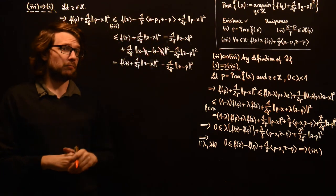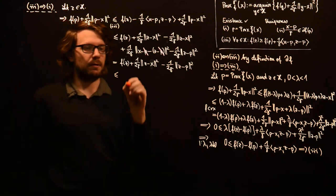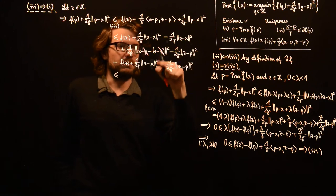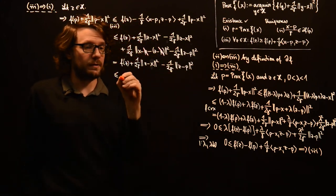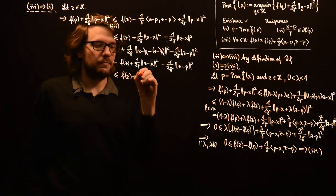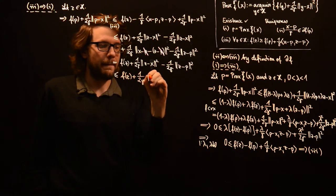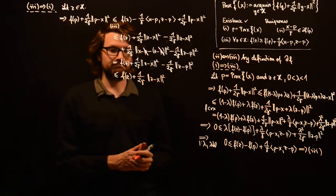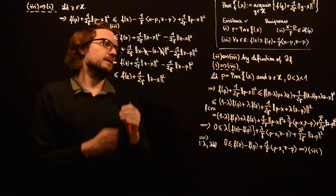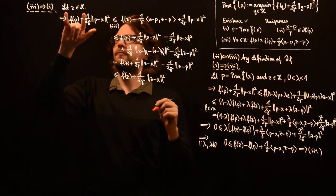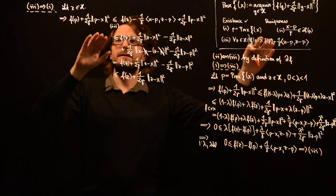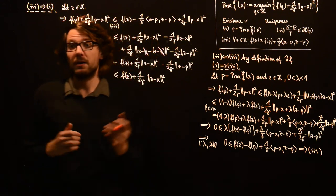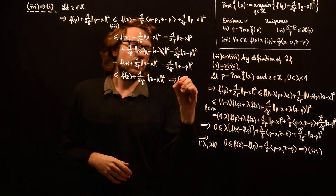This is still f of z plus 1 over 2 gamma times norm of z minus x squared. Then we have 1 over 2 gamma times norm of x minus z squared, which cancels, minus 1 over 2 gamma times norm of z minus p squared. This is less or equal than the same expression without the last term, since that term is certainly not positive. This is exactly what we wanted to show — for all z in H, the function at p is less or equal than the function at z. This shows property 1.